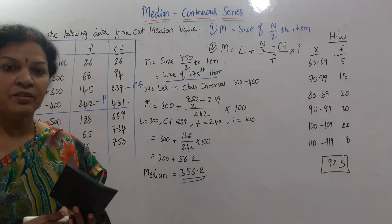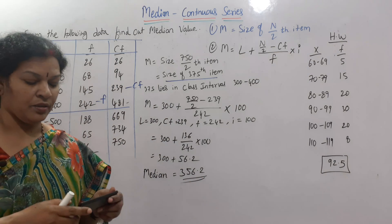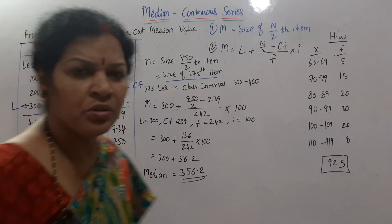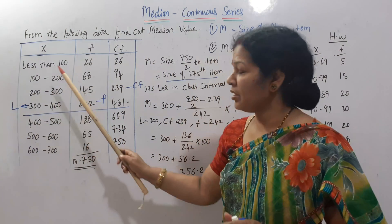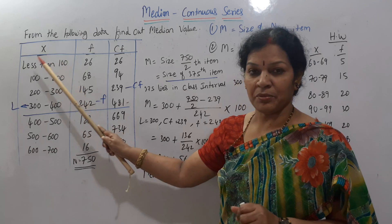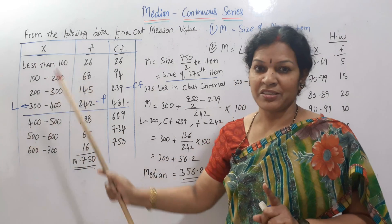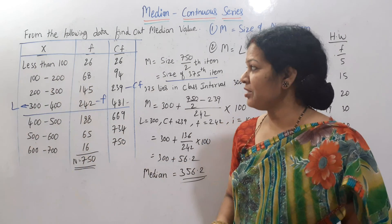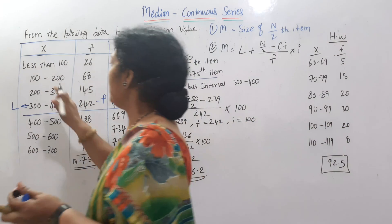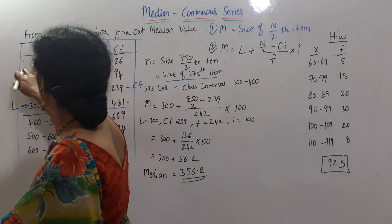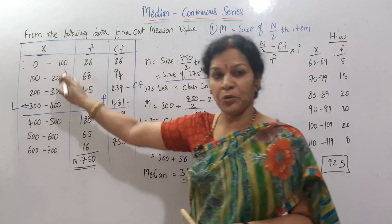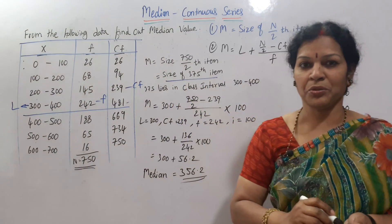Let me clarify one point I forgot to mention: the first class interval was given as 'less than 100.' Less than 100 means you convert it to 0 to 100. Always change that kind of notation to a proper class interval format.